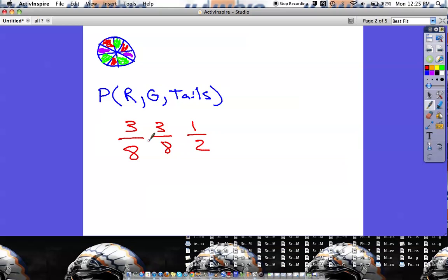So all we need to do to figure out what is the probability of all three of these things happening one after the next after the next, we just need to multiply straight across. So 3 times 3 times 1 is 9, and 8 times 8 is 64, 64 times 2 is 128.